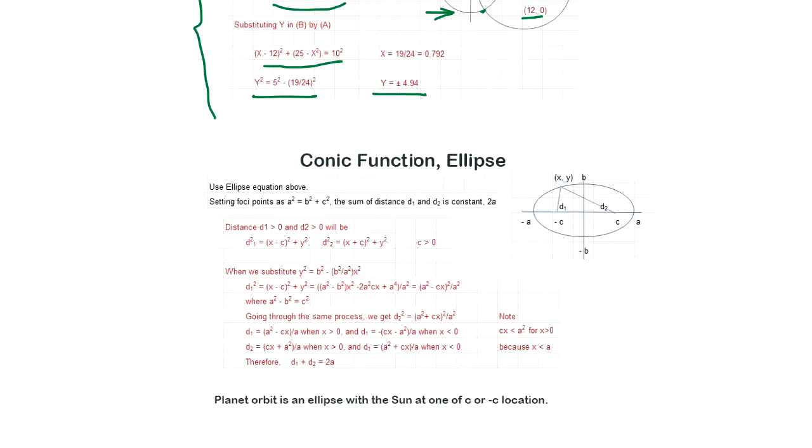Ellipse: we have ellipse, so we try to prove that if the focus point a² = b² + c² - b is this one, right, and a is this one - a² = b² + c². This is (c, 0), this is (a, 0), and this is (0, b) coordinates. The sum of distances d1 + d2 is constant, equal to 2a. We prove this one.